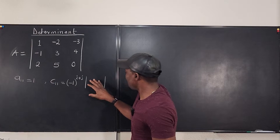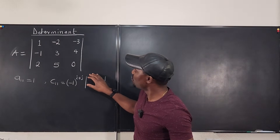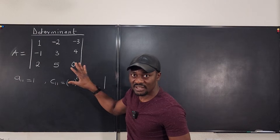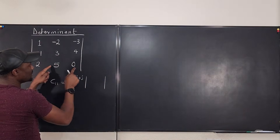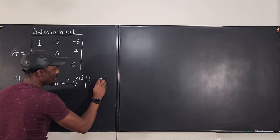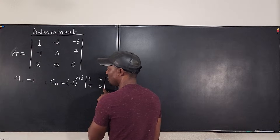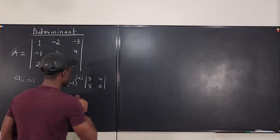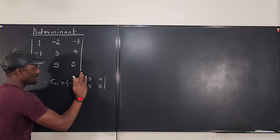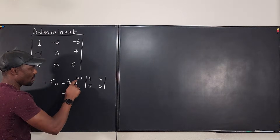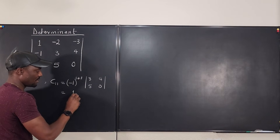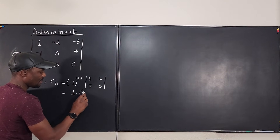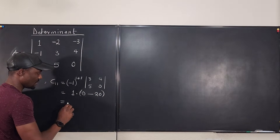The minor is the matrix of elements that do not share the same row or column as the element in question. For a₁₁, that gives us the submatrix with entries 3, 4, 5, 0. Since i=1 and j=1, we get (−1)^(1+1) = (−1)² = 1. The determinant of that minor is (3×0) − (4×5) = 0 − 20 = −20. So the cofactor of a₁₁ is −20.